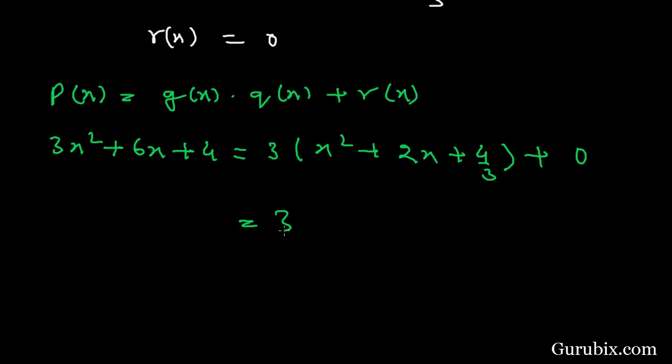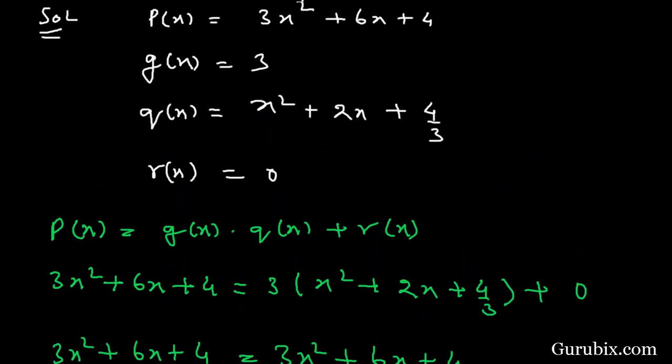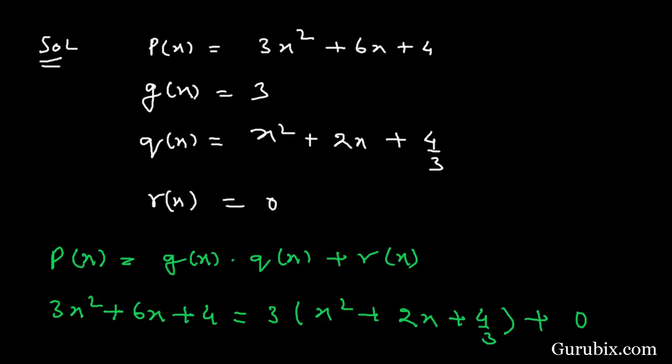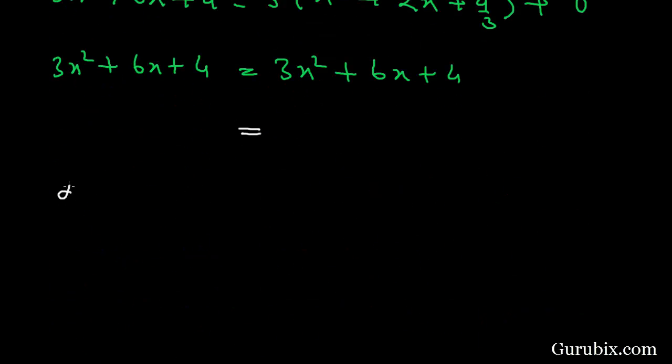And here we have 3x² + 6x + 4. Hence, the division algorithm is satisfied. We see that the degree of p(x) is 2.